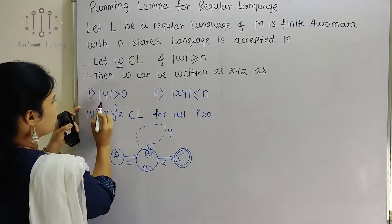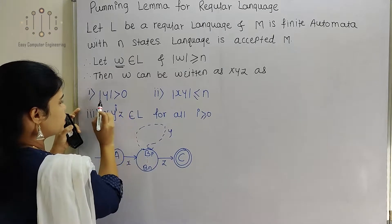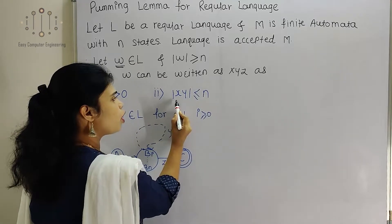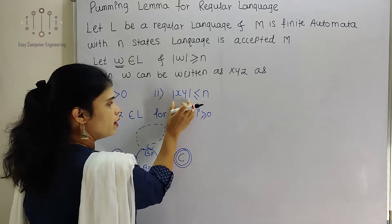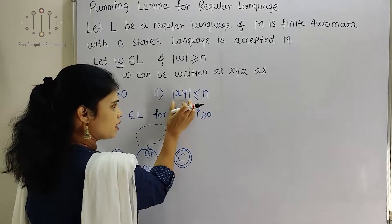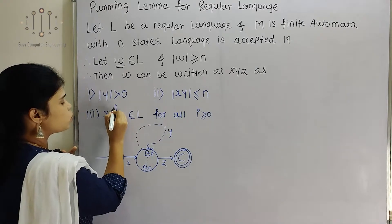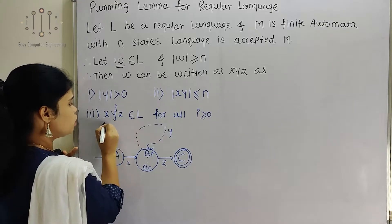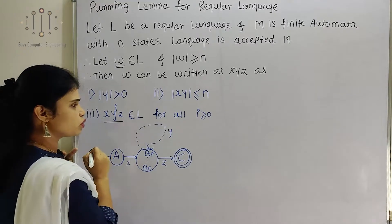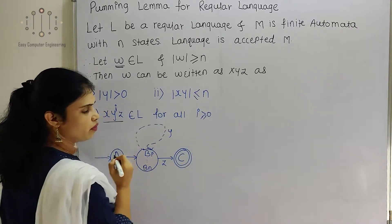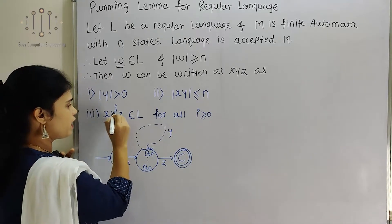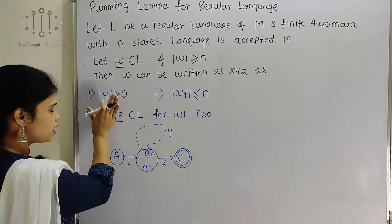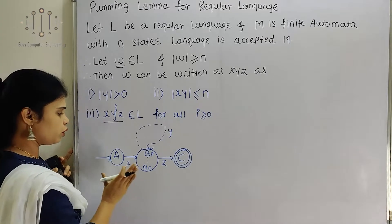There are three conditions for the Pumping Lemma. First, |Y| > 0, meaning the length of Y is greater than 0. Second, |XY| ≤ N, meaning the combined length of X and Y is less than or equal to N. Third, X Y^i Z belongs to L, where i ≥ 0. Here Y is going to be repeated — we are pumping it.